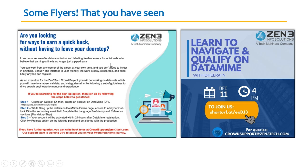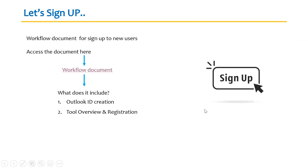These are some of the flyers you might have seen. Three steps are extremely important. First, create an Outlook ID, then create an account on the Data Mine platform using the URL app.datamine.ai. Creating an Outlook ID is extremely important. Once you create it, you have to enter it as your secondary email within the sign-up process. Your account will be activated within 24 hours after Data Mine registration.